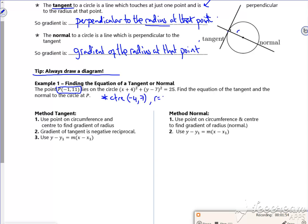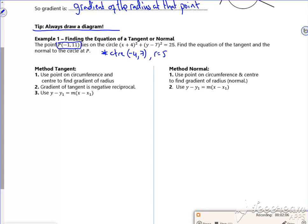So I can draw myself a little picture. I'm just gonna put it in. So the center is (-4, 7) and the point I'm interested in is (-1, 11), so (-1, 11) will be up there. So that's the point P(-1, 11). I've got the tangent going that way.